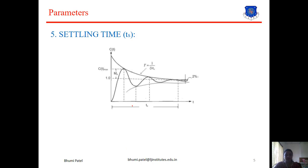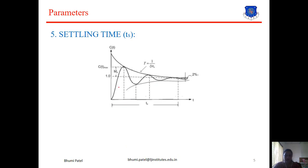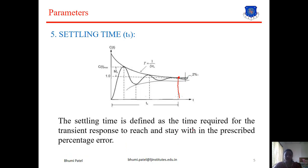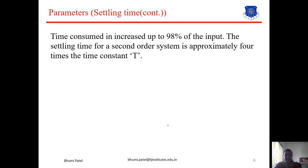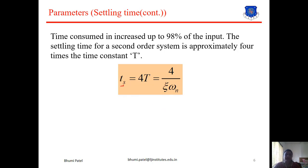Next is the settling time Ts. The system has some error and after some time becomes stable, transitioning to the steady state response. The settling time is defined as the time required for the transient response to reach and stay within a specified percentage error. The time consumed in increasing up to 98% of the final input means the settling time for a second order system is approximately 4 times the time constant T. The equation is: Ts = 4T = 4 / (ζ × ωn).